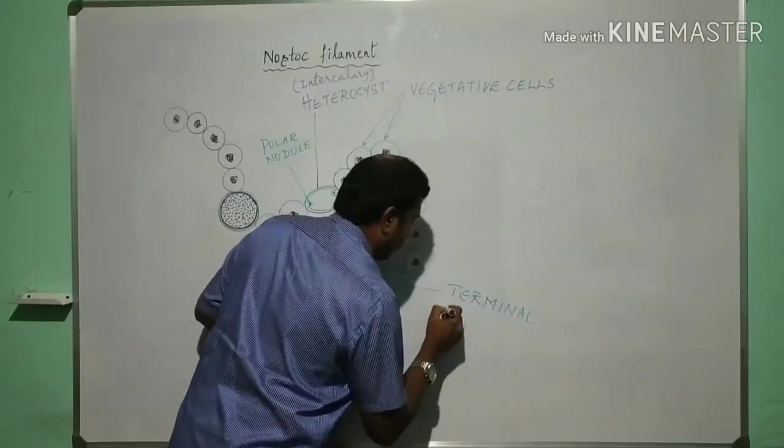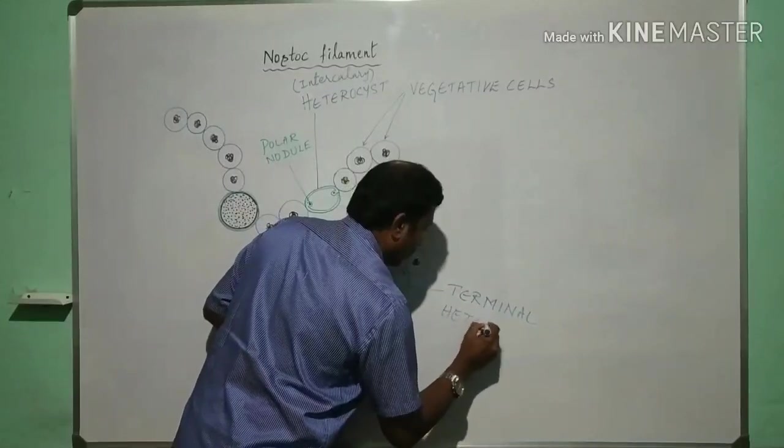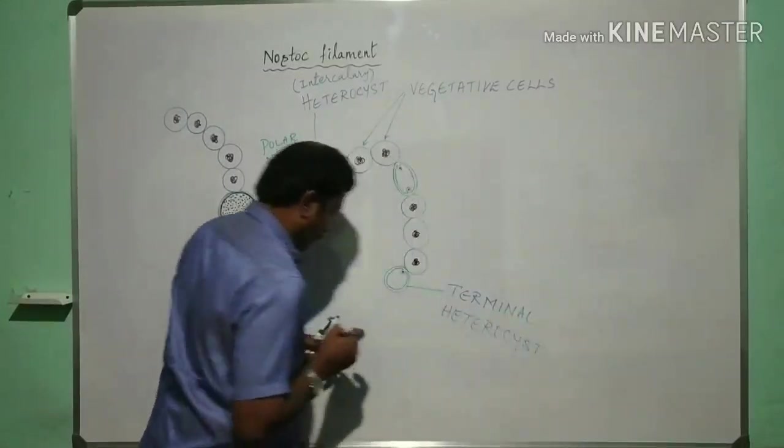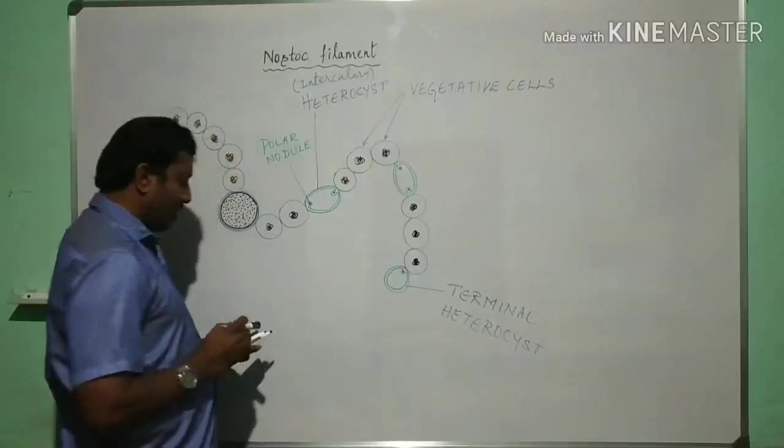And this is called terminal heterocyst with only one polar nodule.